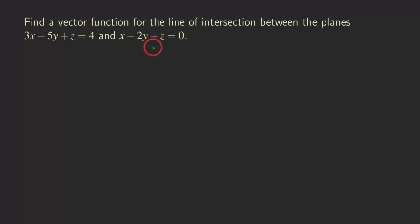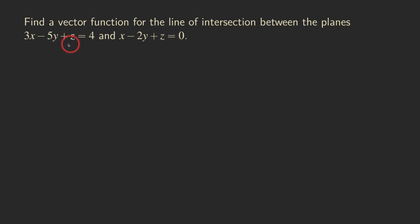So how do we know that the planes will intersect? We can actually simply just look at their normal vectors: (3, -5, 1) and (1, -2, 1). You can see that those two vectors are not multiples of each other, which means the two planes are not parallel. In that case, they are going to intersect in a line.